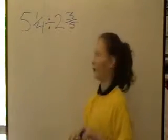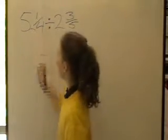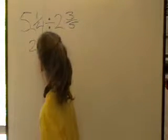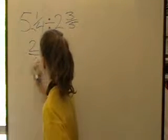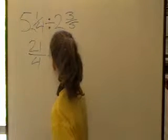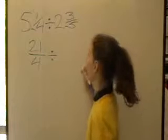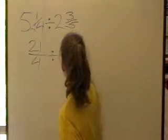Now we change it to an improper fraction. 5 times 4 equals 20 plus 1 is 21. 2 times 5 is 10 plus 3 is 13.